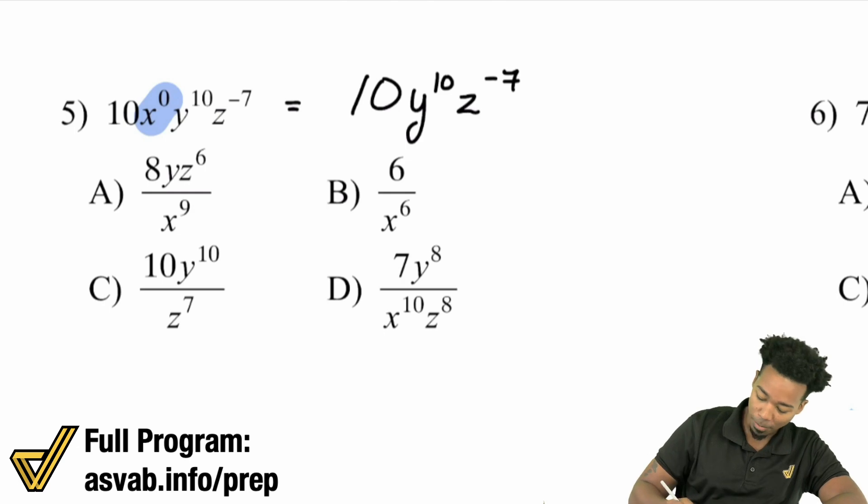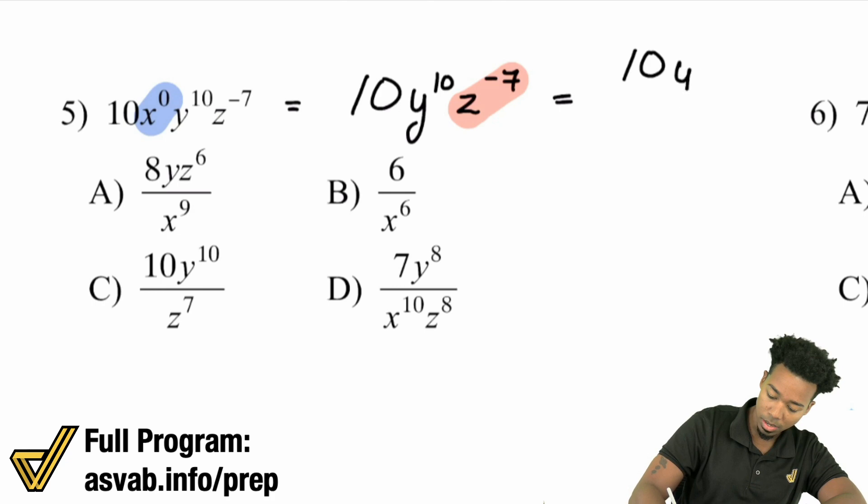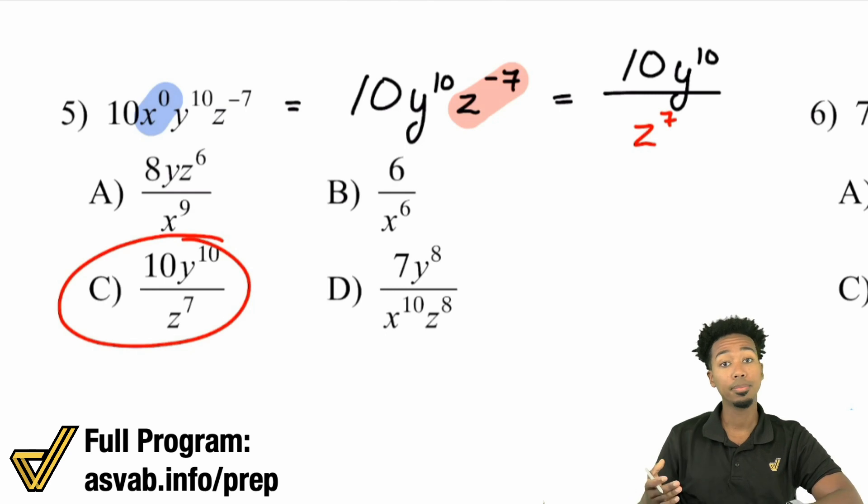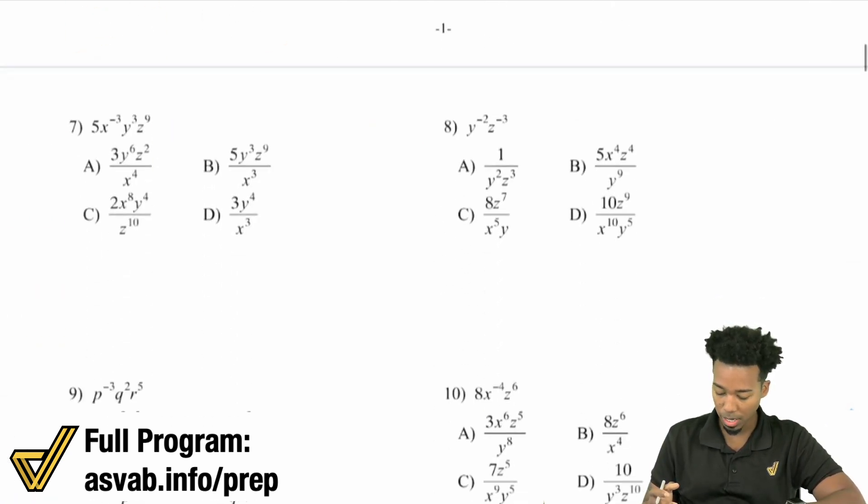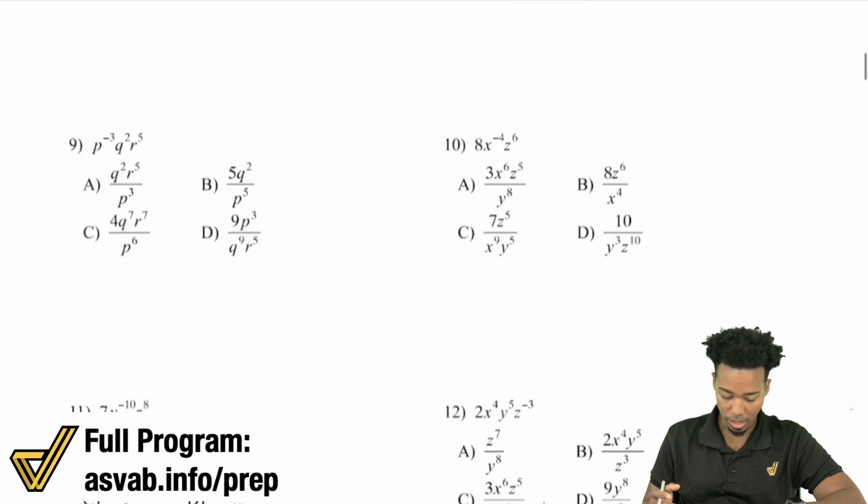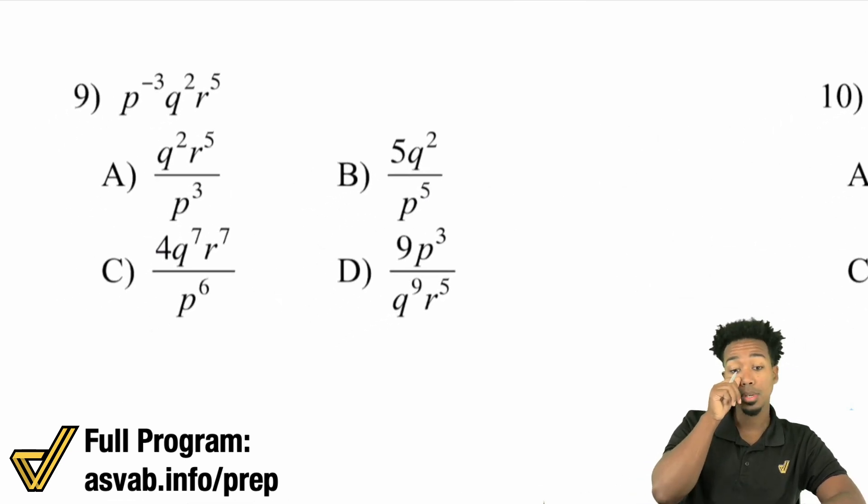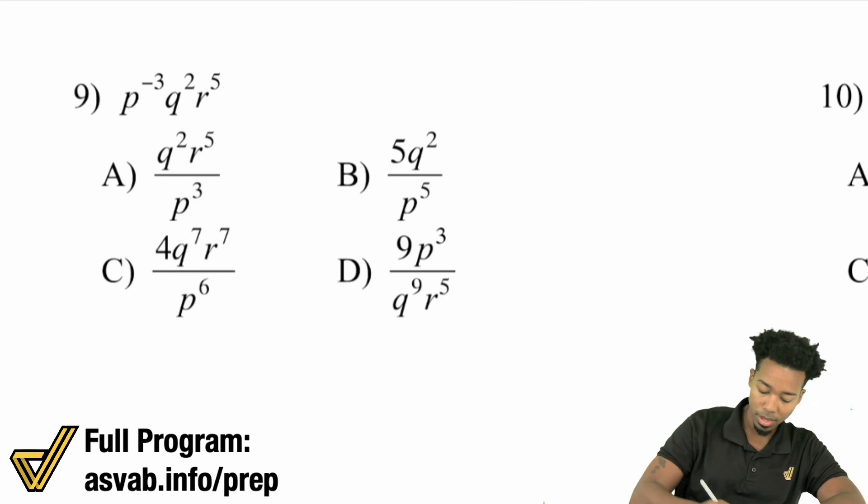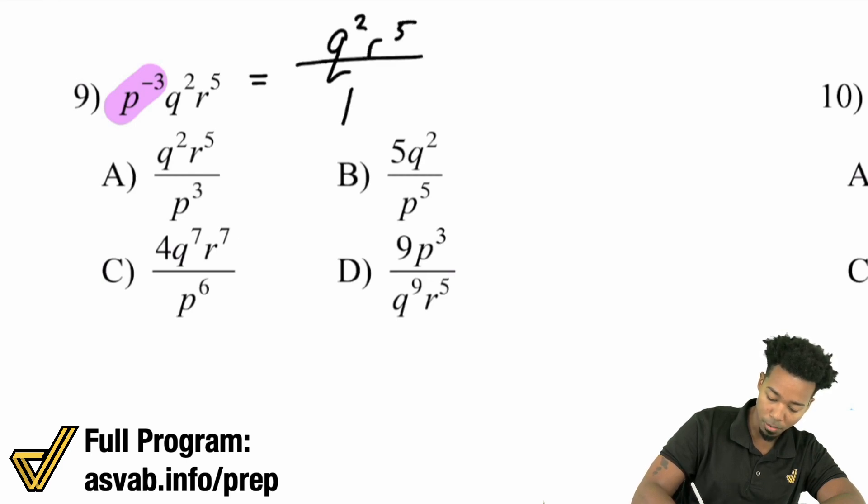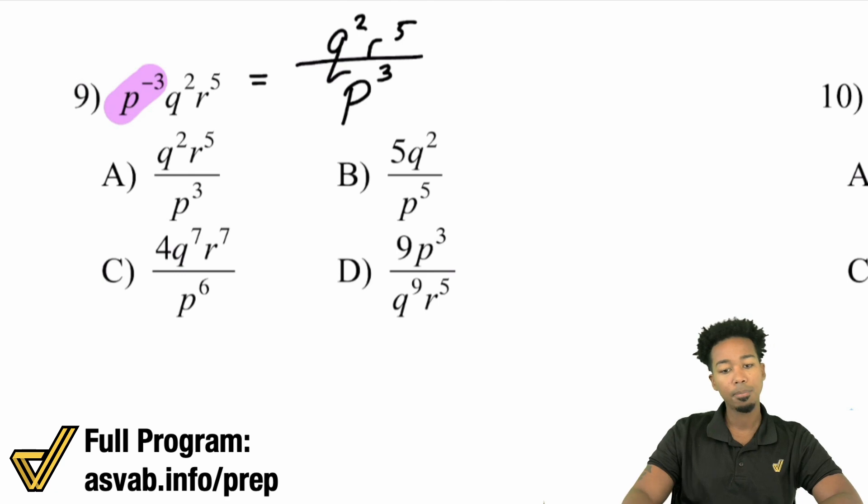So with that, now we can focus on that negative exponent right there, which makes our answer here, 10 y to the power of 10, all over z to the power of positive seven. And so that's answer choice C. And we're good to move on. So I'm going to take us through a few more examples here, my party people want to take us through plenty more examples. So let's go ahead and take a look at number nine here, p to the power of negative three, q squared, r to the power of five, we only have to worry about that p to the power of negative three. So we have q squared, r to the power of five, all over p cubed, nice and easy right there.